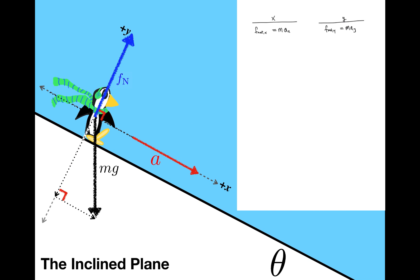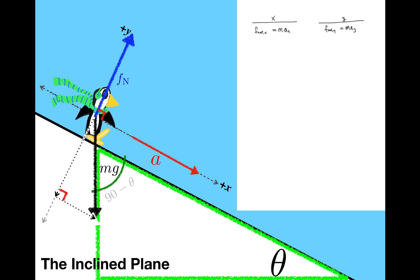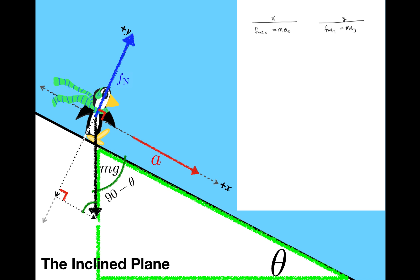I'm going to need to know something about the angles in that triangle I just drew if I'm going to find components. Looking at this large triangle, this angle is 90 minus theta. That means that this angle is also 90 minus theta because it's an opposite interior angle. And that makes this angle up here equal to theta. And now I'm in a position to write down the components.